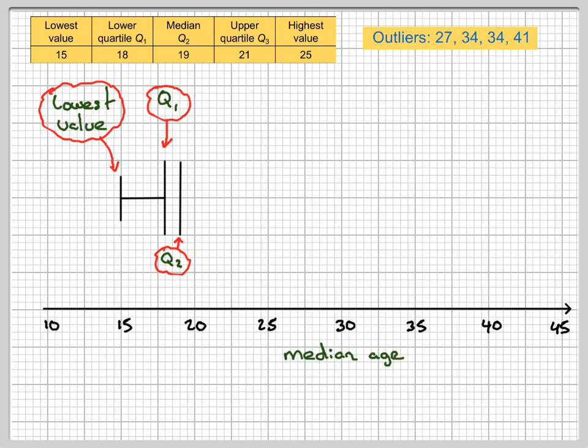Okay, and then the upper quartile will be at 21, which will be here. Then we will join this line up here and this line up here. Okay, put in the highest value in at 25. And then we draw a straight line up to here.